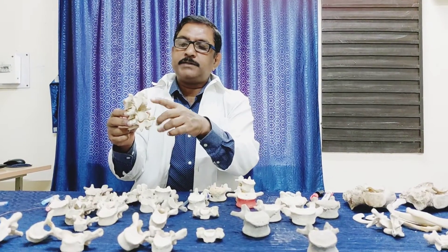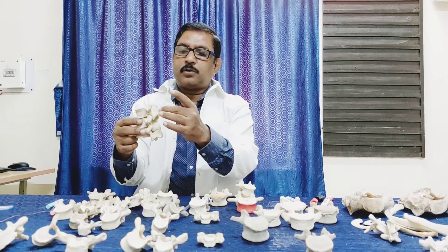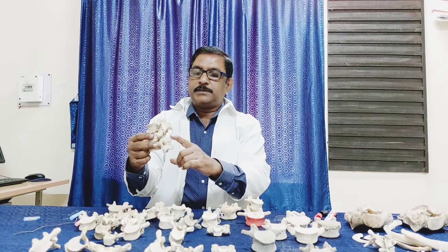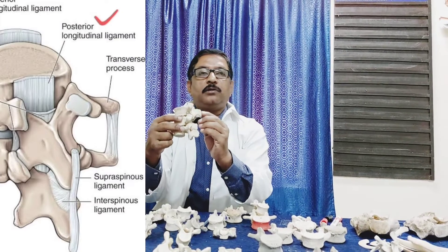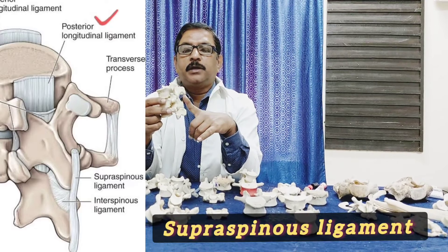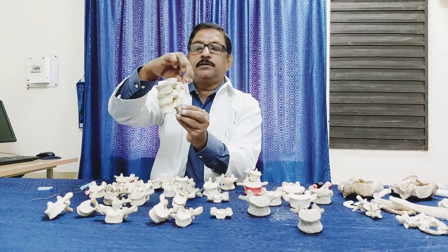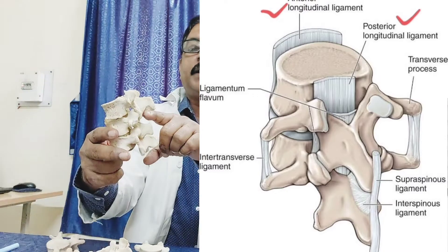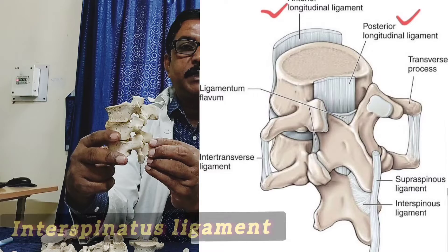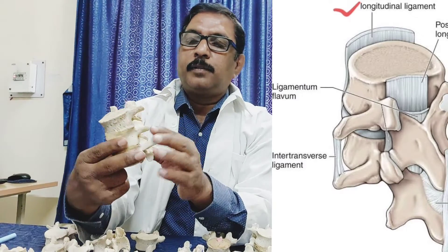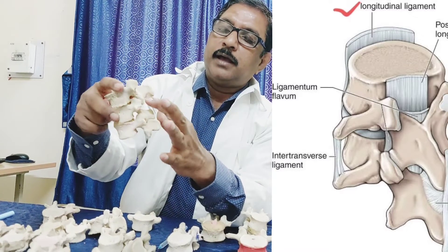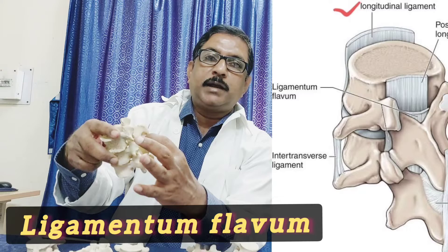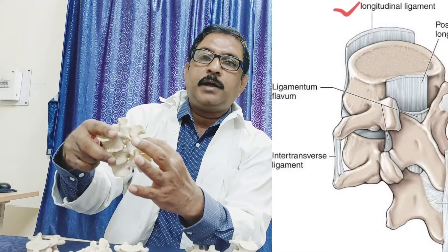All the spines of the lumbar vertebra are broad and quadrilateral, extending more or less horizontally backward. The tips of the spines are interconnected by a ligament called the supraspinous ligament. The upper border and lower border of the spine give attachment to another ligament called the interspinous ligament. From lamina to lamina — the lower border of the lamina of the upper vertebra and the upper border of the lamina of the lower vertebra — they are interconnected by the ligamentum flava.